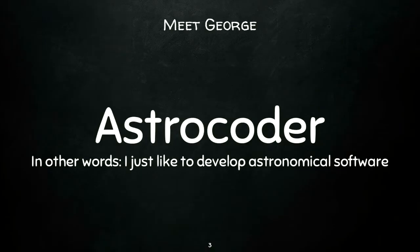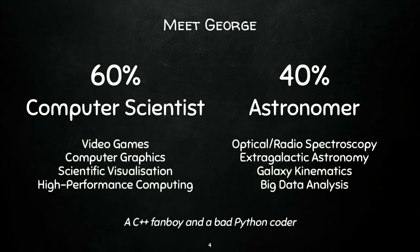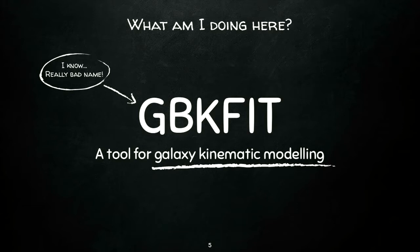I call myself an astrocoder. I like to code software for astronomy. I'm more of a computer scientist with a background in programming video games, computer graphics, and scientific visualization. About seven years ago, I decided to do a PhD in astronomy, and since then I have expertise on galaxies and processing astronomical data. I'm a C++ fanboy, I would say. I would like to talk about a software that I wrote during my PhD. I wrote it in C++, and last year I imported it into Python. I'd like to share my experience and thoughts. It's software for galaxy kinematic modeling. If you don't know what this means, don't worry. In five minutes, you're going to be experts in galaxy kinematic modeling, actually.